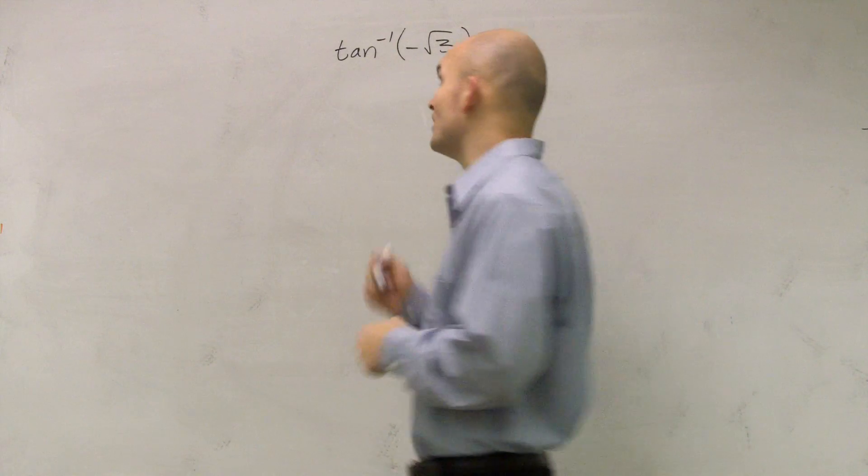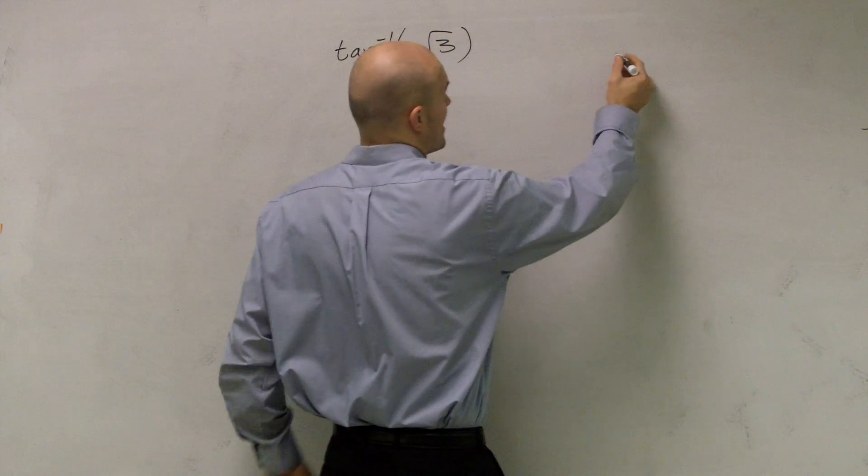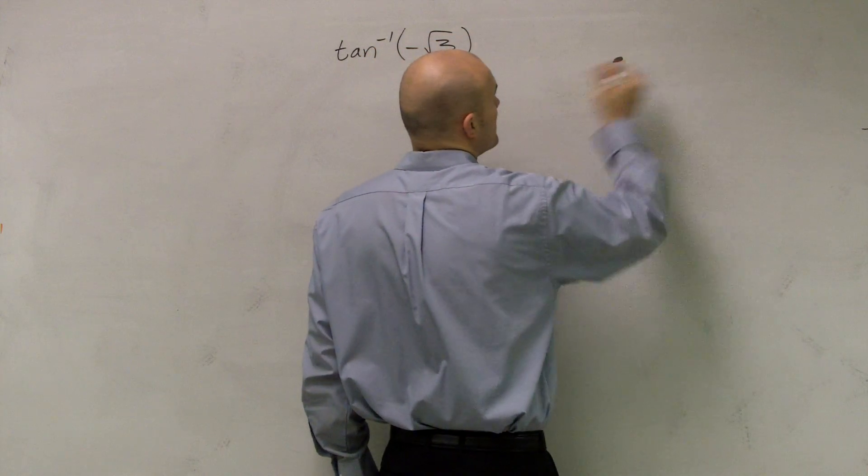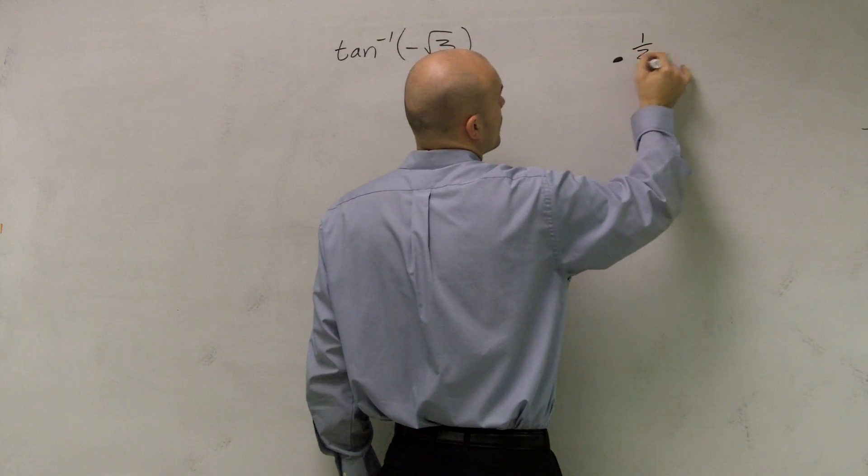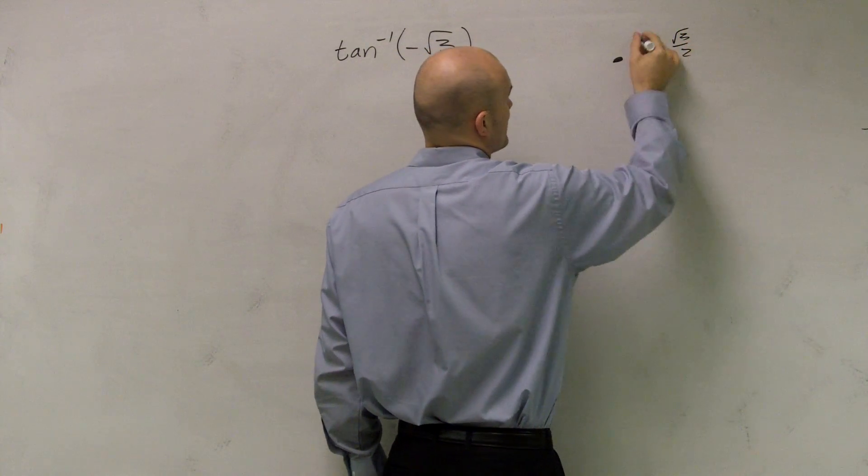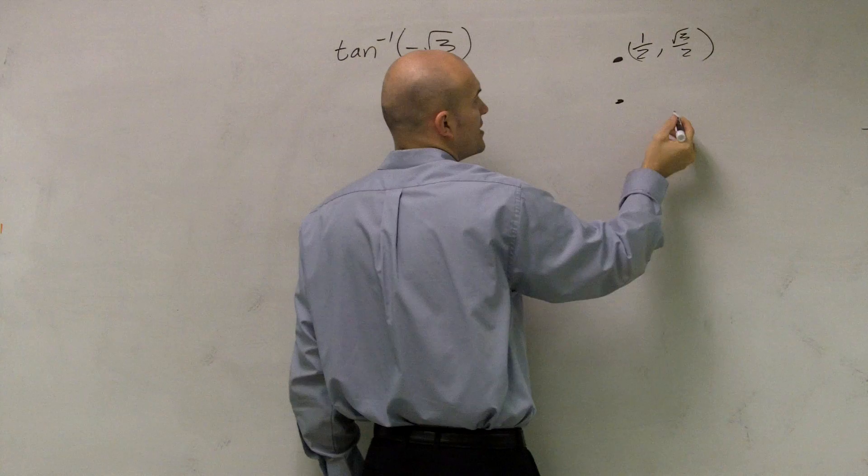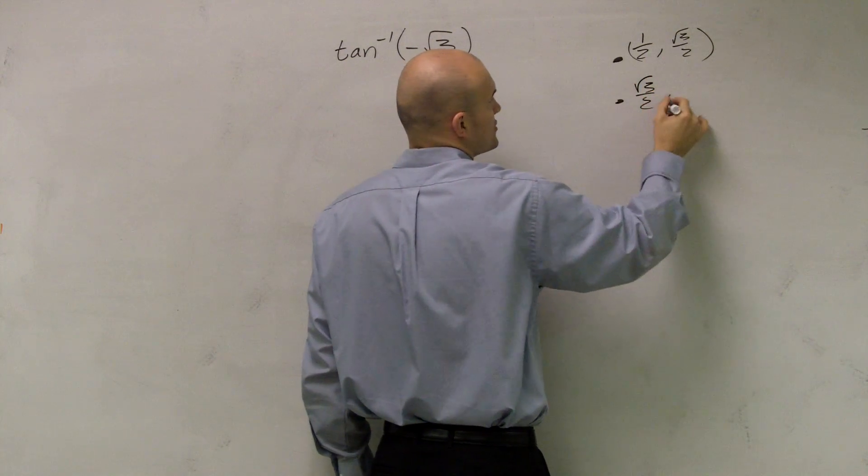So there's a couple points. Now remember, there's three unique coordinate points. We have a point on our unit circle that has 1 half, radical 3 over 2. We have another coordinate point on it, which is radical 3 over 2, comma, 1 half.